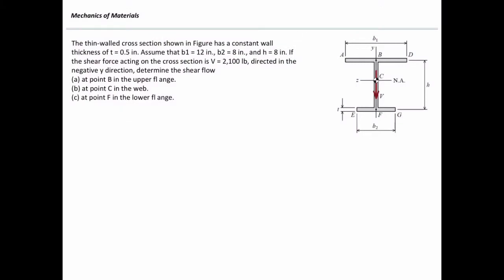In this problem, we have a thin-walled section subjected to a shear force in the y-direction equal to 2,100 pounds. We want to determine the value of shear flow at points B, C, and F. Shear flow is simply shear stress times the thickness, which can be calculated from the equation VQ over I, where the thickness T cancels out. The parameters needed are shear force V, first moment of area Q, and moment of inertia I.